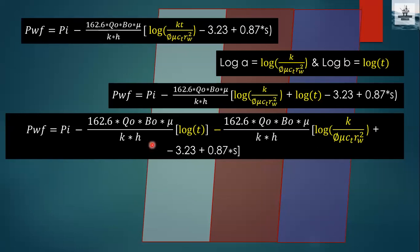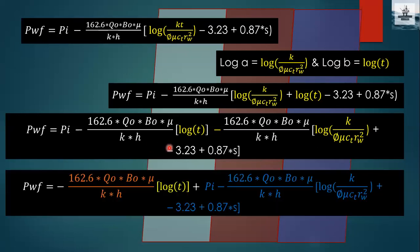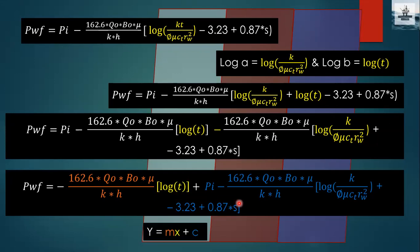The agenda is to get the equation into y = mx + c form so we can estimate the slope. Here the white term is the y-axis (pwf); the orange term 162.6·q_o·B_o·μ/(kh) is the slope m; log t in golden is the x-axis; and the remaining blue terms are the y-intercept c. So y-axis is pwf, m = 162.6·q_o·B_o·μ/(kh), and x = log t.